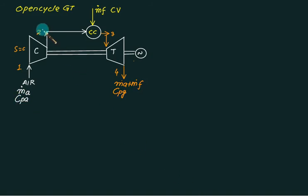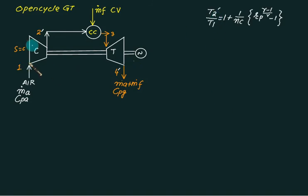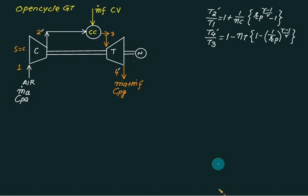Given component efficiencies, T2-dash can be calculated directly from T1 using the compressor equation. T3 is the maximum permissible temperature in the cycle, normally provided. T4-dash can be calculated from T3 using the turbine equation. Once all temperatures are known, power can be determined from the temperature differences.